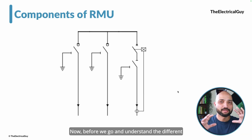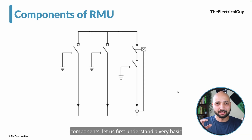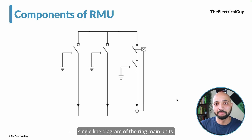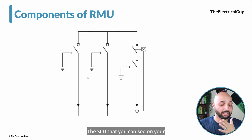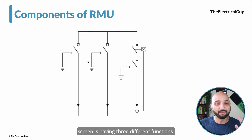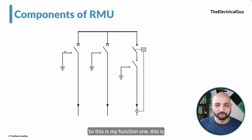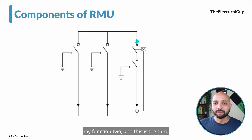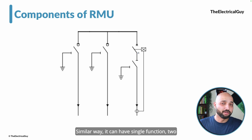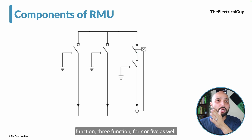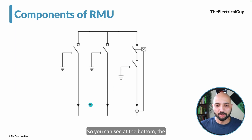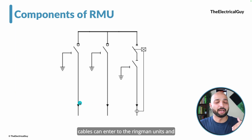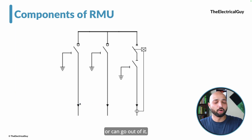Before we go and understand the different components, let us first understand a very basic single line diagram of the ring main unit. Ring main units can have multiple functions. The SLD you can see on your screen has three different functions — function one, function two, and function three. Similarly, it can have a single function, two, three, four, or five functions depending on the requirement. At the bottom, cables can enter the ring main unit or go out of it.